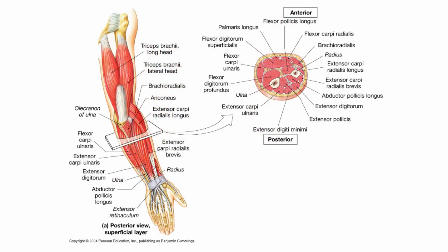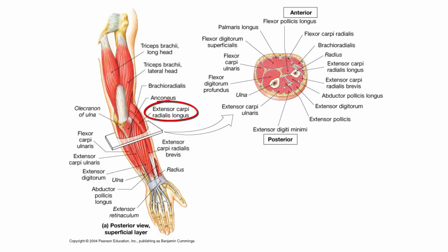On the posterior view of the arm, we have the extensor carpi ulnaris, which extends the wrist; the extensor digitorum, which extends the wrist and fingers; the extensor carpi radialis longus, which extends the wrist; and the extensor carpi radialis brevis, which also extends the wrist. If the muscle is on the ulnar side, you'll also get some ulnar deviation; if it's on the radial side, you'll get radial deviation — meaning the hand bends toward the radius or toward the ulna.